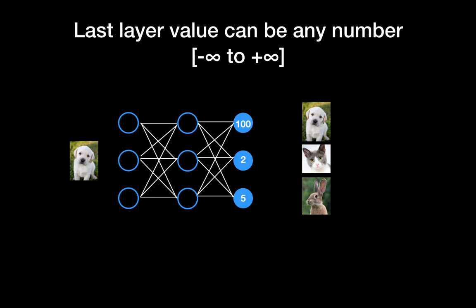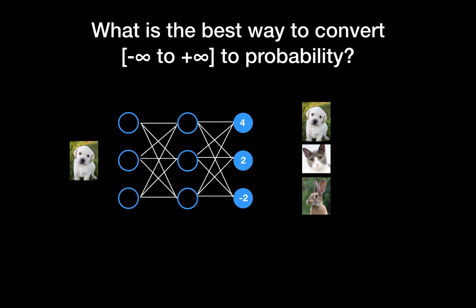We can say the input is a dog because it has the greatest output value from the last layer. However, we can also have negative values, since the range starts from minus infinity — for example, minus 2 for the rabbit. This is not ideal because we want probabilities from the output layer, not raw values spanning minus infinity to plus infinity.